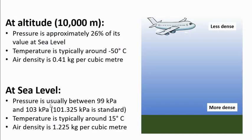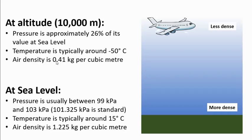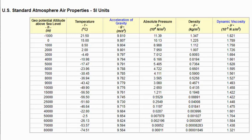Starting at the bottom at sea level, pressure is usually between about 99 and 103 kilopascals, with the standard set at 101.325 kilopascals, and surface temperature is generally around 15 degrees Celsius across the globe. Under those conditions, the density of air is around 1.225 kilograms per cubic meter. In a plane at about 33,000 feet or 10,000 meters, the pressure is approximately 26 percent of its value at sea level, and it gets quite cold up there — around minus 50 degrees outside. Because the pressure is lower, the air density is only about 0.41 kilograms per cubic meter. These are actual values from the US Standard Atmosphere.